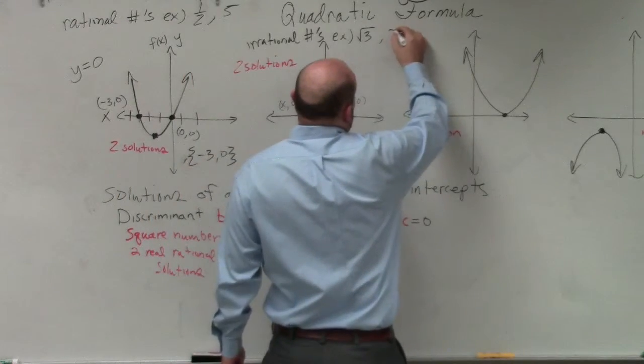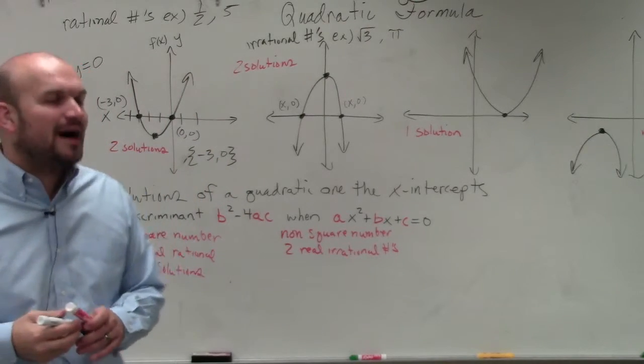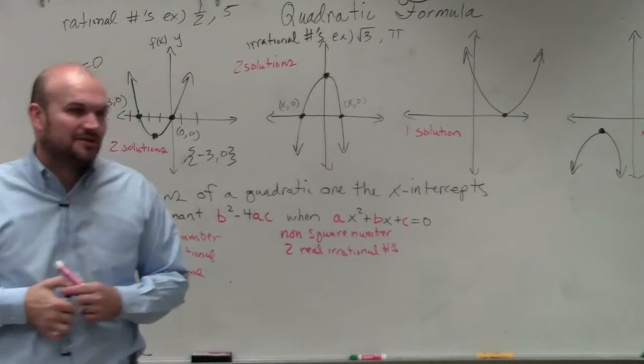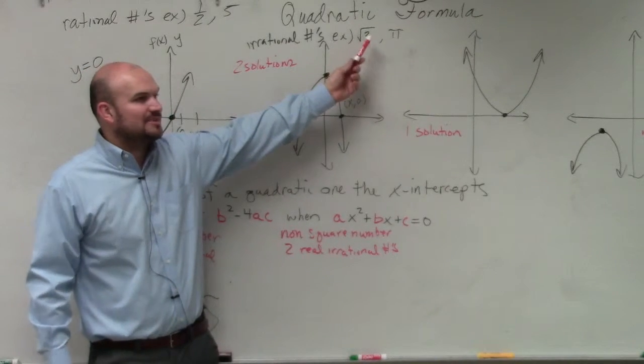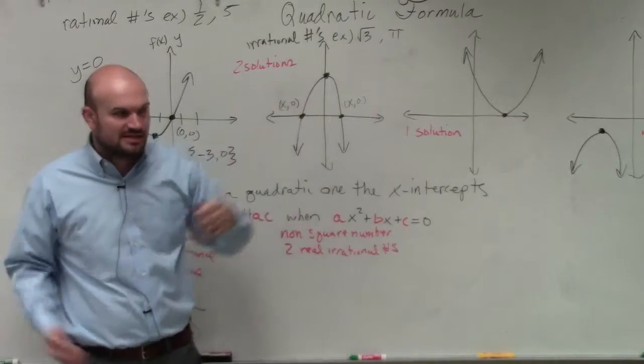Another common irrational number is pi. Now, I will tell you, you're not going to have a discriminant that's going to equal pi. So don't worry about that. Your only irrational numbers is going to be numbers that you cannot take the square root of, that we're going to discuss in this chapter.